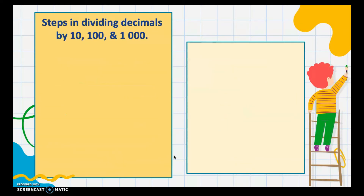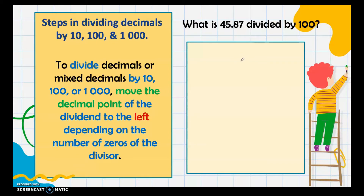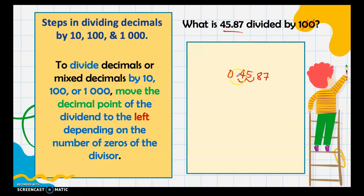Next: dividing decimals by 10, 100, 1000, and so on. To divide decimals or mixed decimals by these numbers, just move the decimal point of the dividend to the left, depending on the number of zeros in the divisor. For example, 45.87 divided by 100: the divisor 100 has two zeros, so we move the decimal point two places to the left. Our answer is 0.4587.